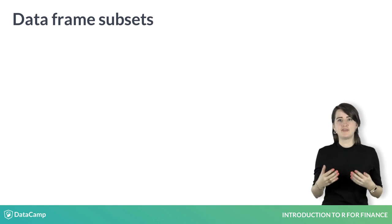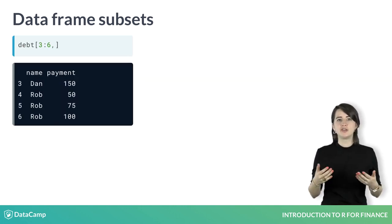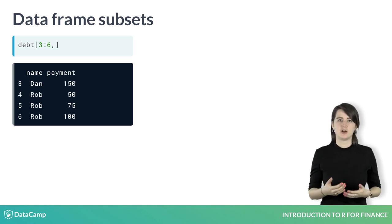In terms of the basics, everything is pretty much the same as accessing elements in a matrix. You can use the brackets to select rows and columns from your data frame. Here we're selecting rows 3 through 6 of debt.